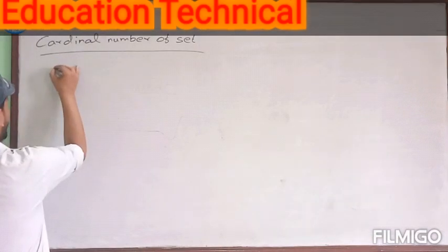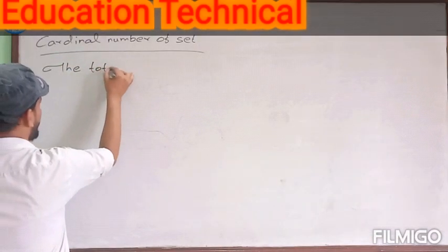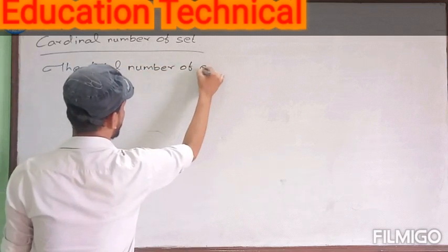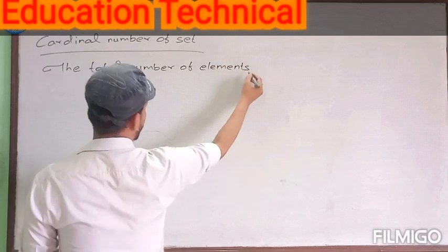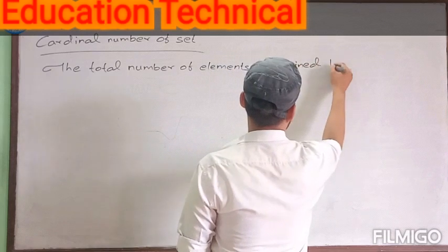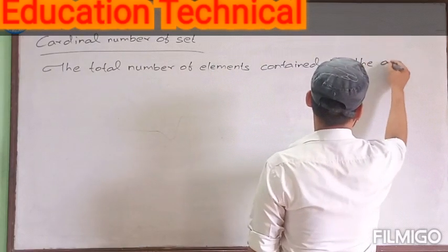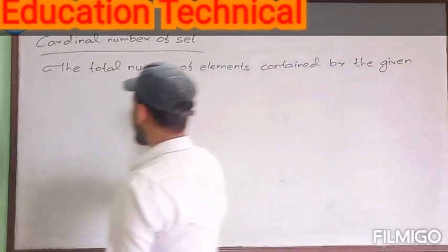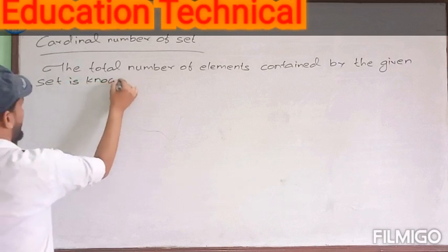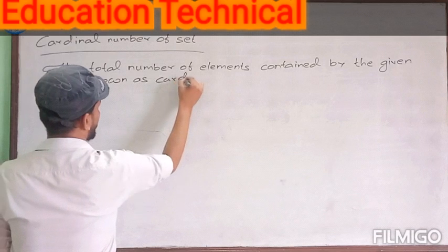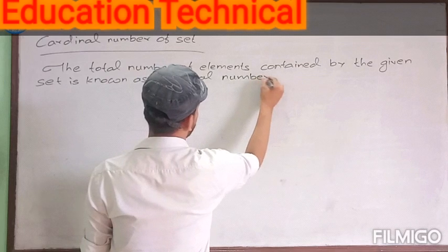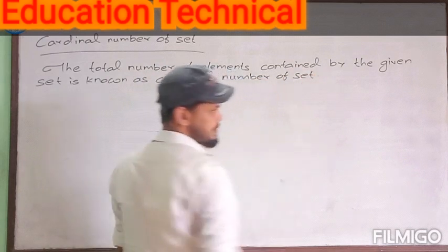So the total number of elements contained by the given set is known as the cardinal number of the set.